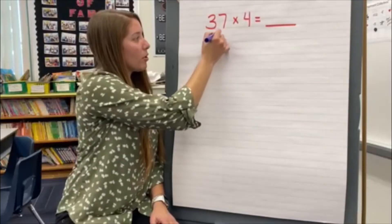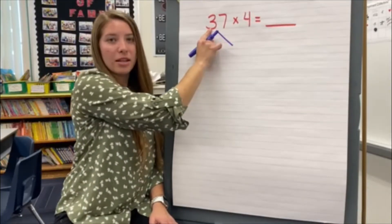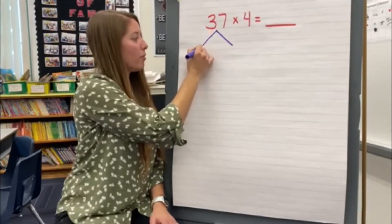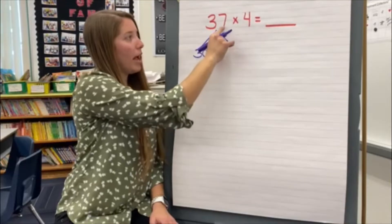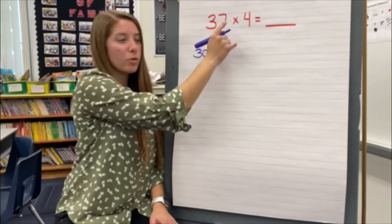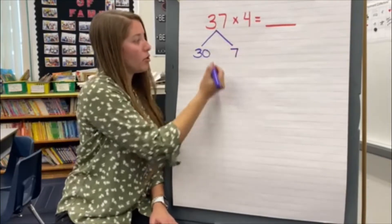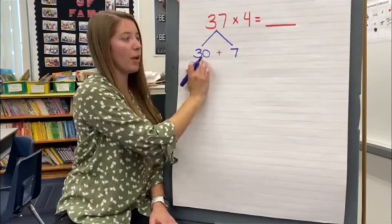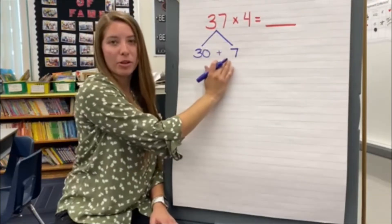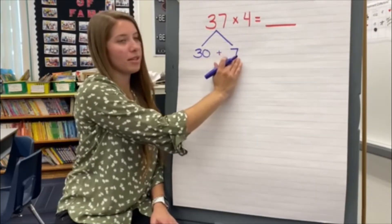So this number 37 has three tens, which has a value of 30. And it has seven ones, which have a value of 7. So really what we're doing here is expanding out that number 37 into 30 plus 7.